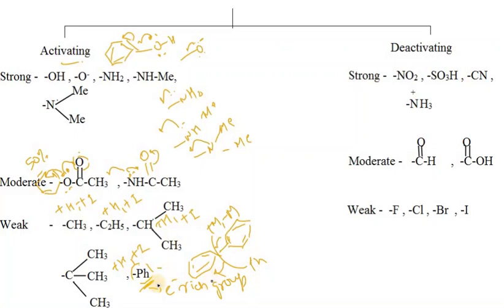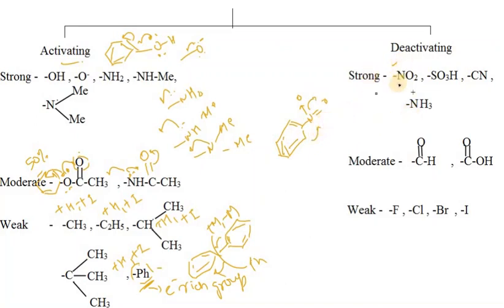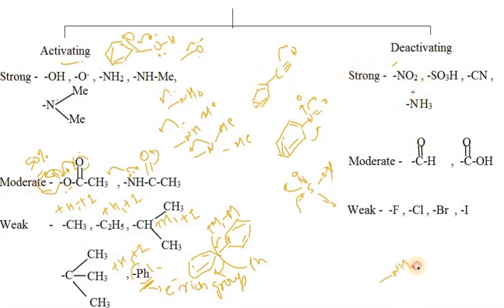The phenyl group is categorized as an activating group. Now for deactivating groups: the NO2 group always withdraws electrons from the ring, making it a strong deactivating group with a -M effect. Cyanide similarly always withdraws electrons from the ring.